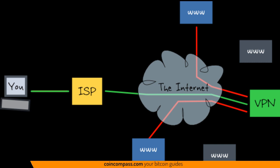Internet banking, buying Bitcoin — use a VPN. Skype or streaming your favorite sports game — no VPN.